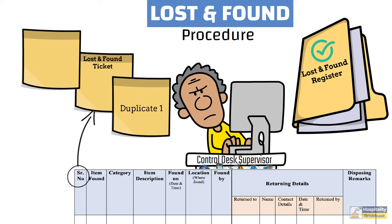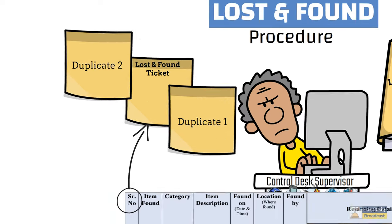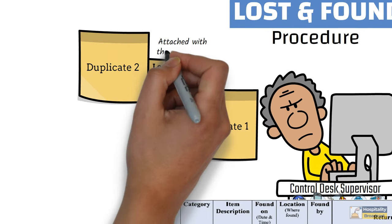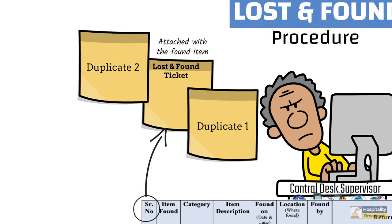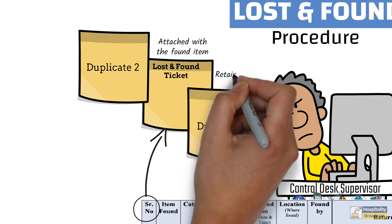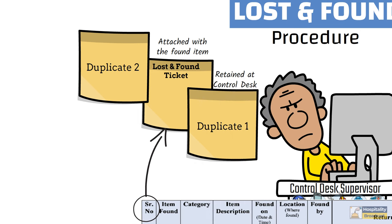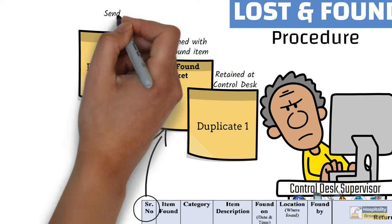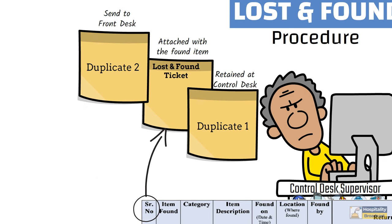This slip is made in triplicate. The original copy is attached and kept with lost and found article inside a cupboard. The second copy is retained at control desk in a folder. And the third copy is sent to front office or reception.